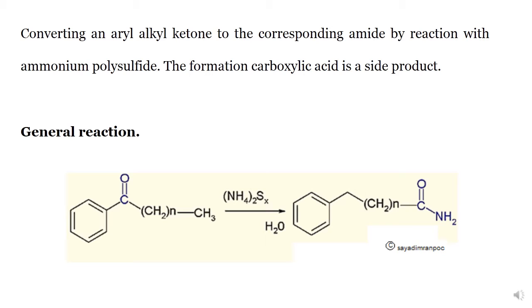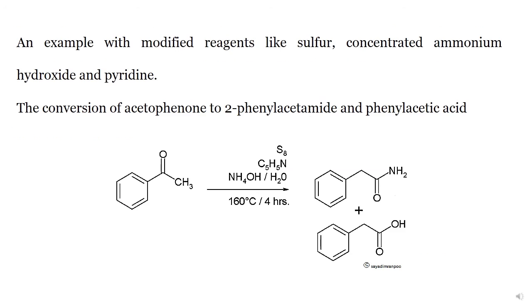Ammonium polysulphide is diammonium trisulphide, that is, a chain of sulfur atoms. Instead of ammonium polysulphide, one can also use sulfur, ammonium hydroxide, and pyridine. This is called the modified Wilgiroth Rearrangement Reaction.